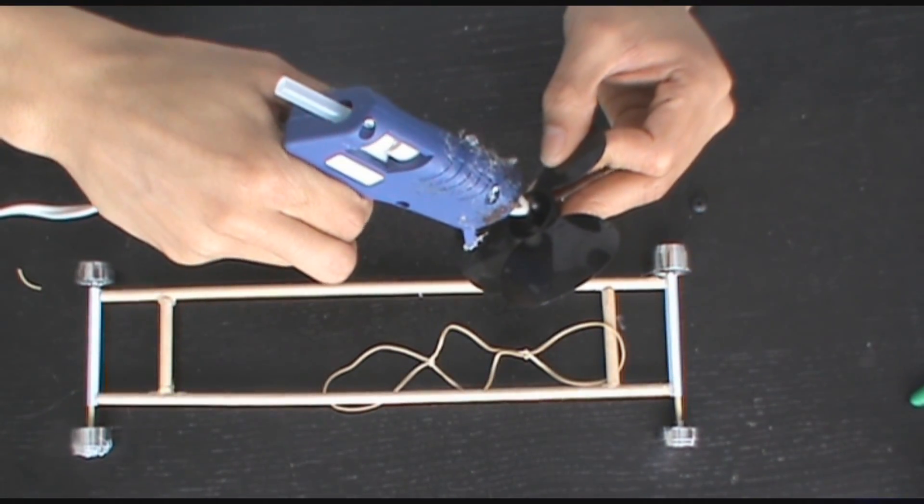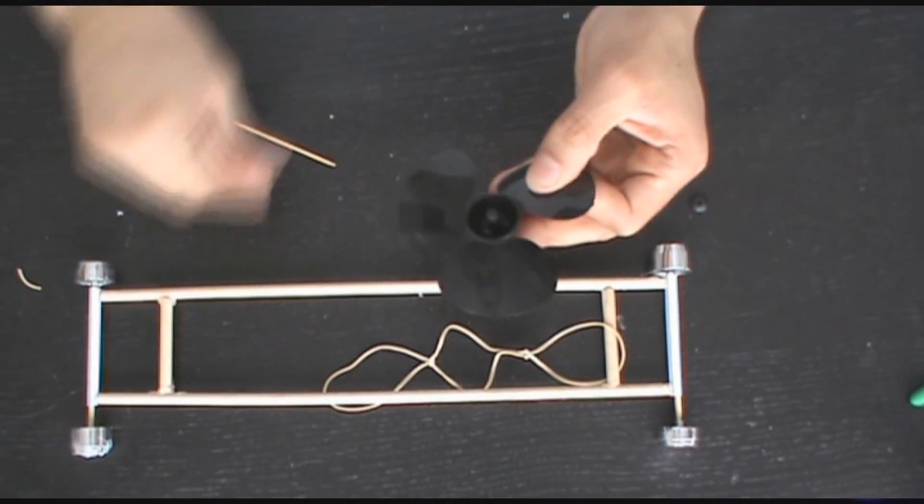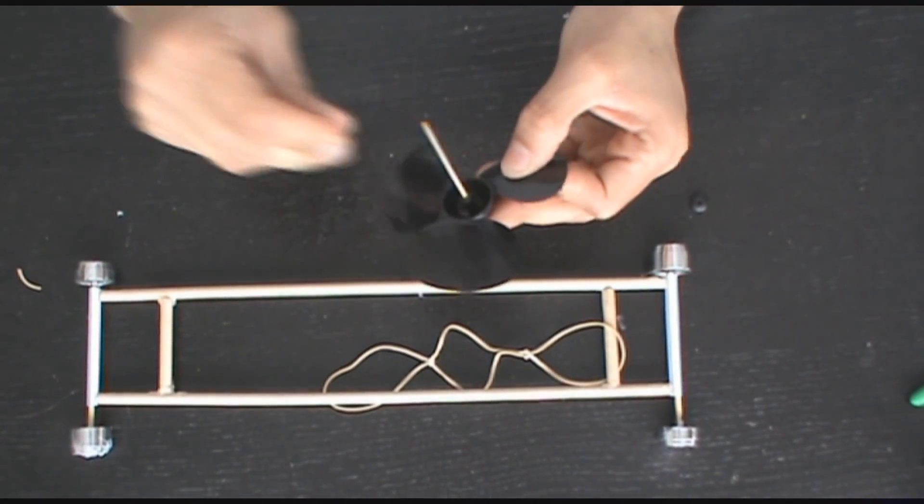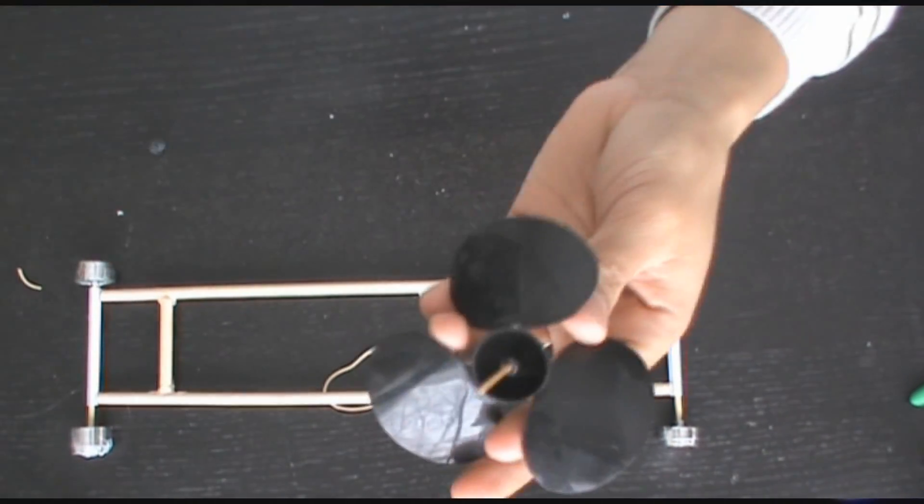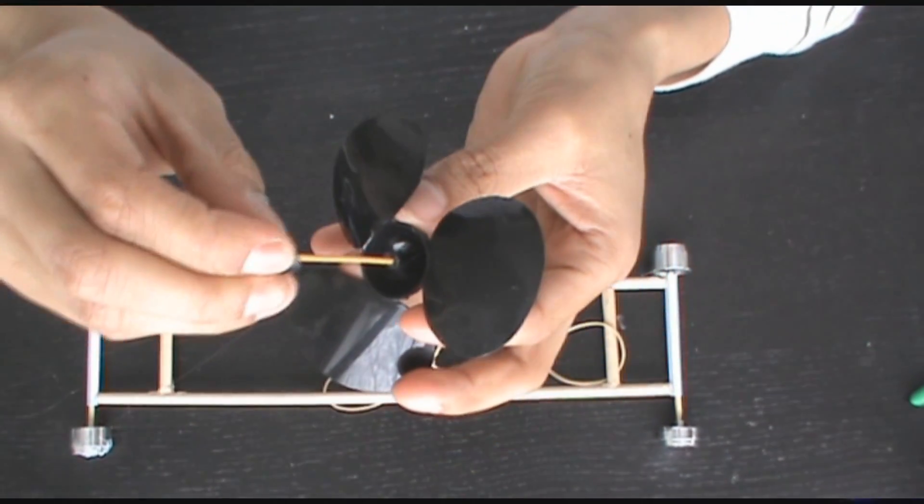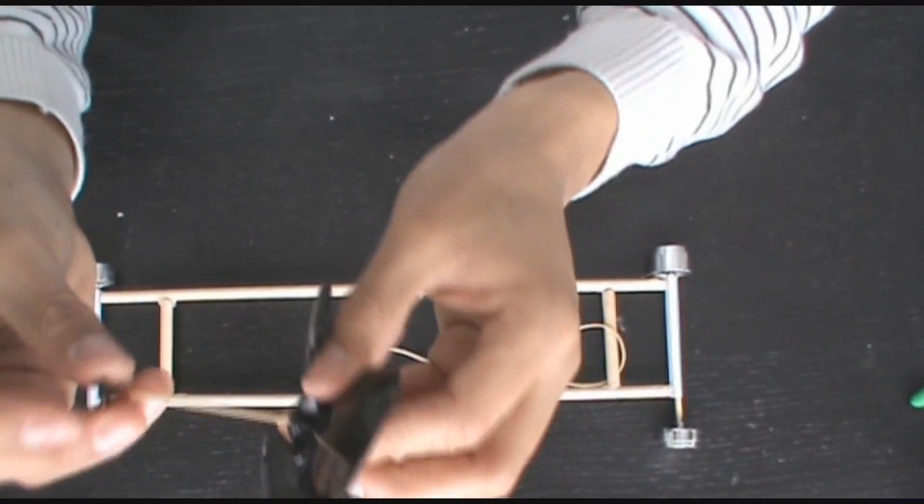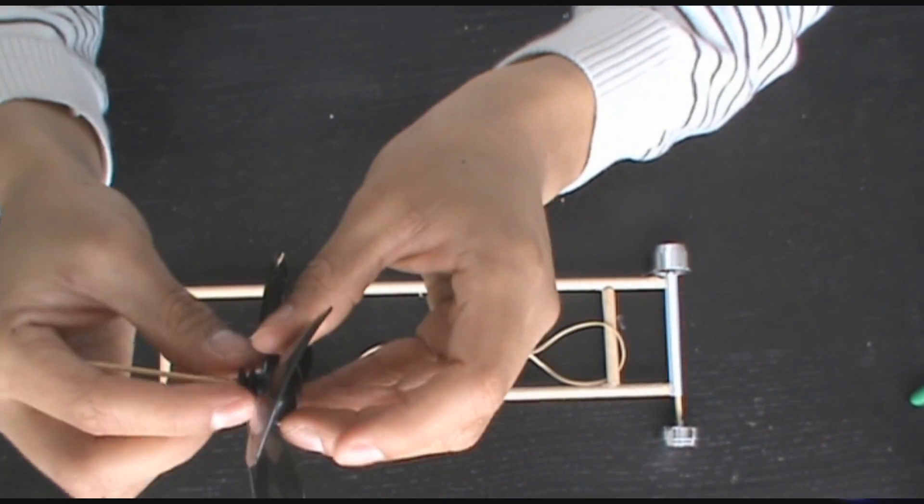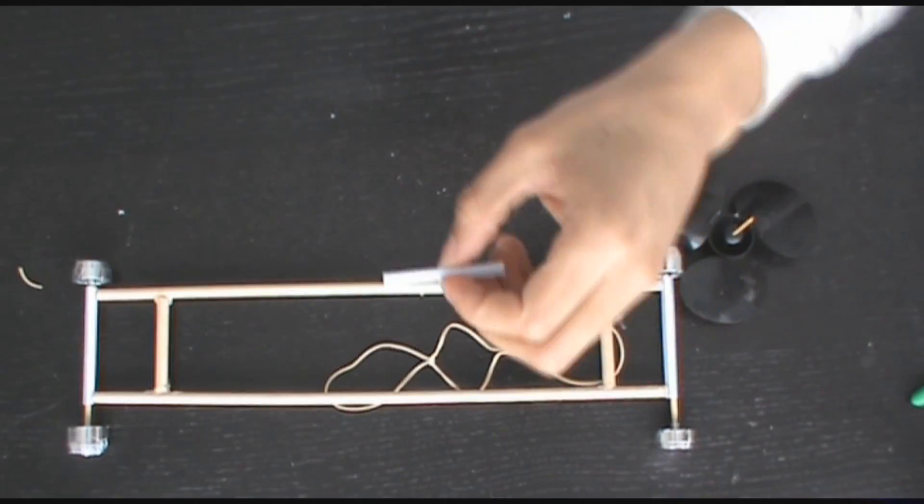I'm going to start off by gluing a toothpick to the propeller, and then one of the spacers are going to be glued onto the propeller as well. These are going to help reduce friction. So that spacer is glued, and then we're going to have one that spins freely, touching the other spacer.